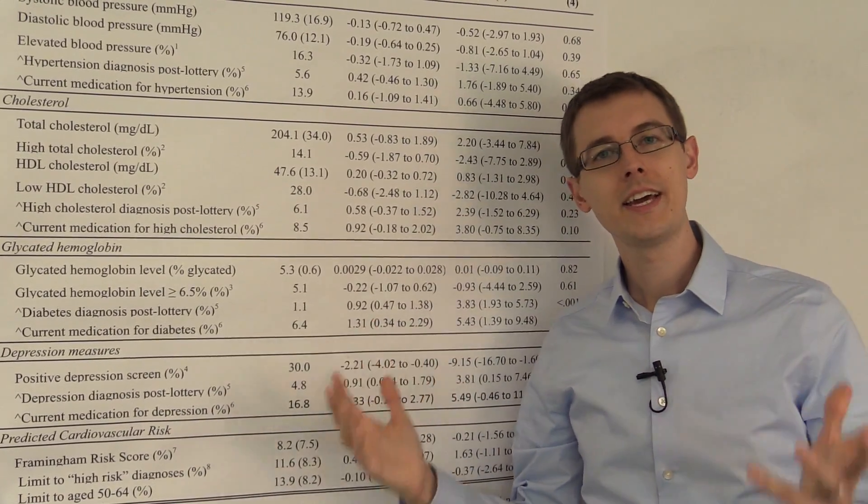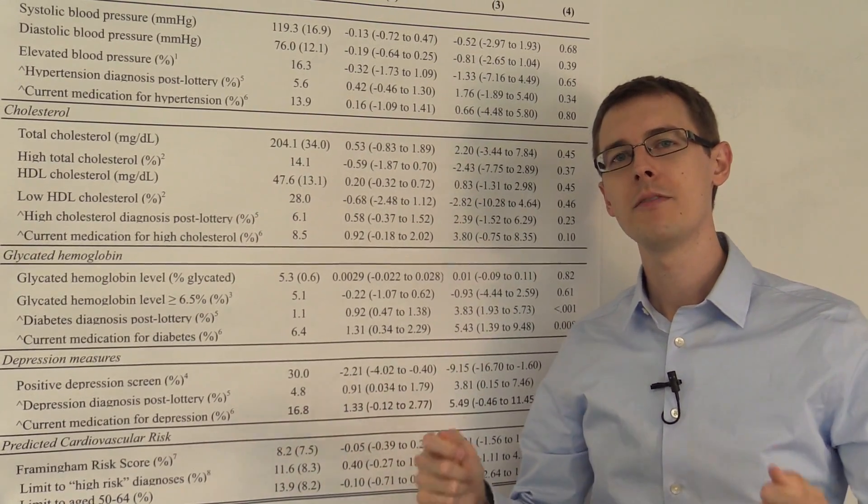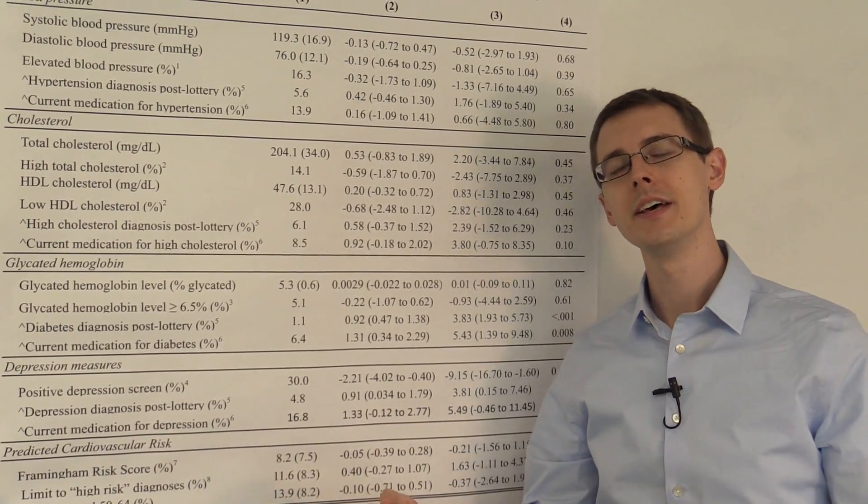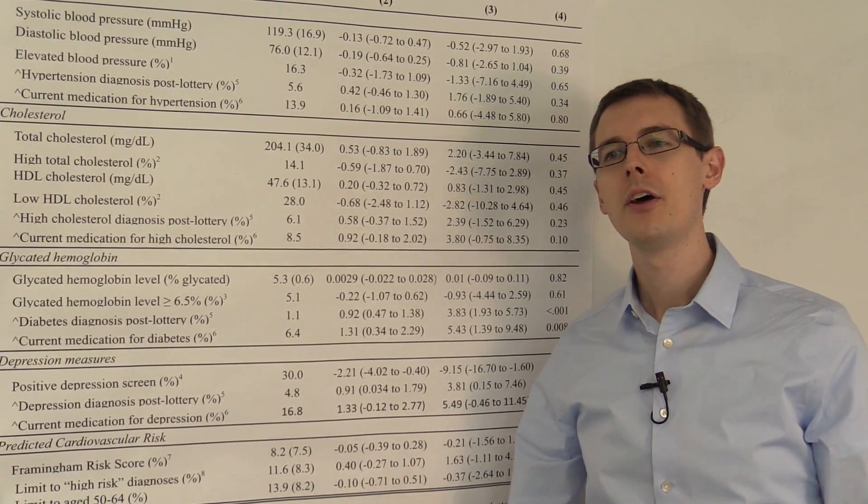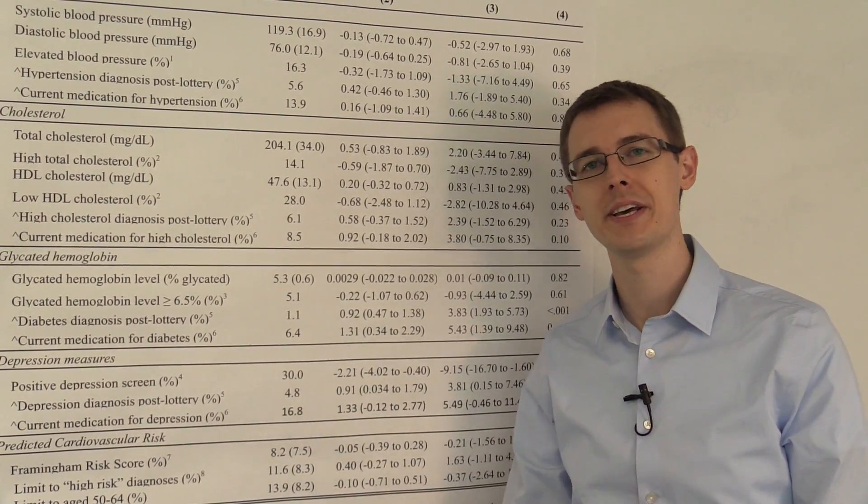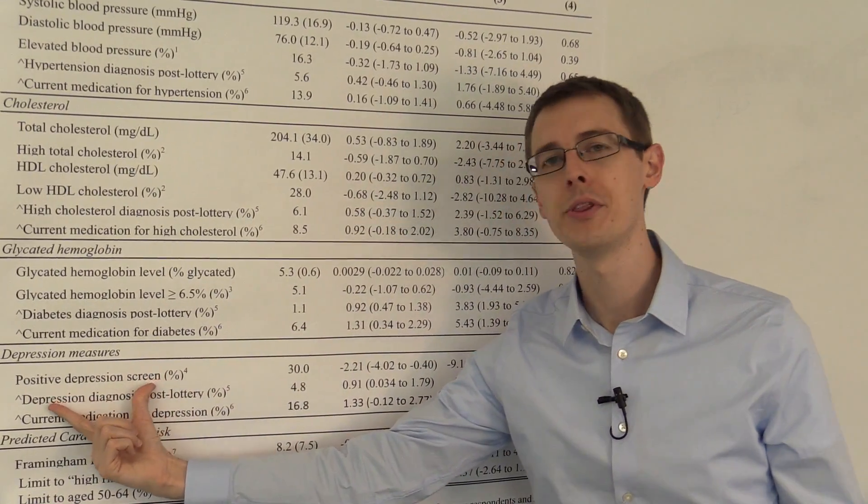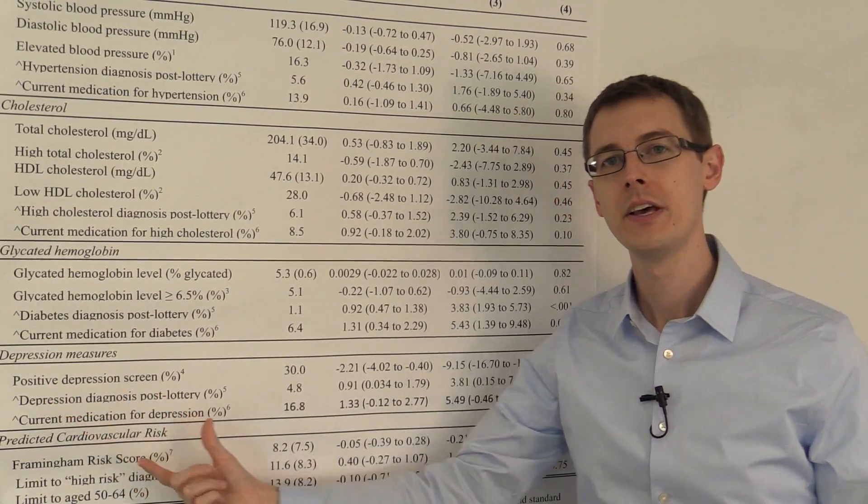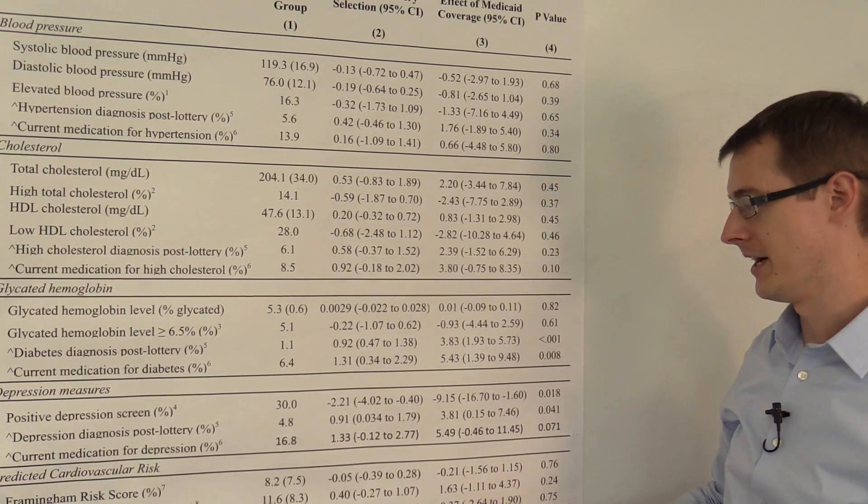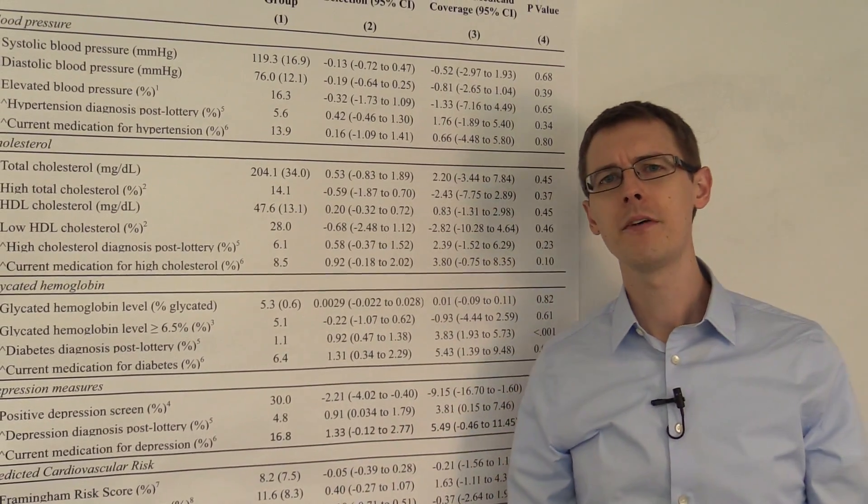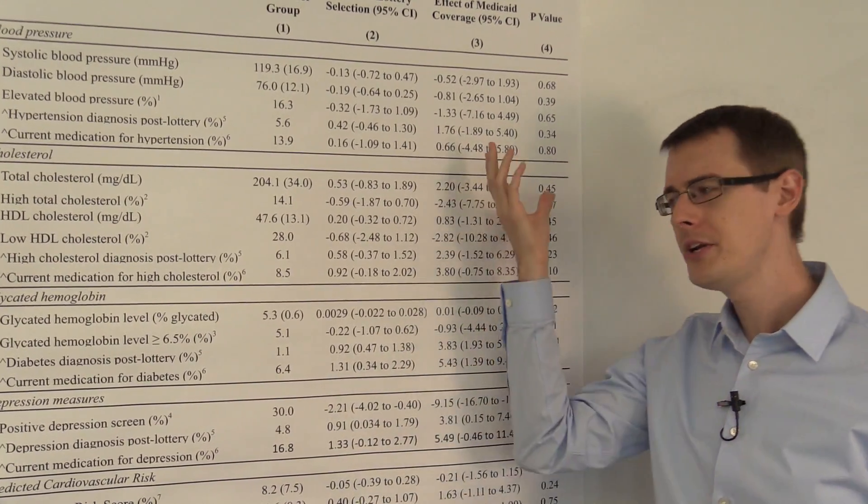Now, we don't necessarily care about what the treatment effect of having the option of getting Medicaid is. Instead, we really care about what the treatment effect of having Medicaid is on whether you have a positive depression screen or not. That's what column 3 does. But we have non-compliance. So how do we do this?